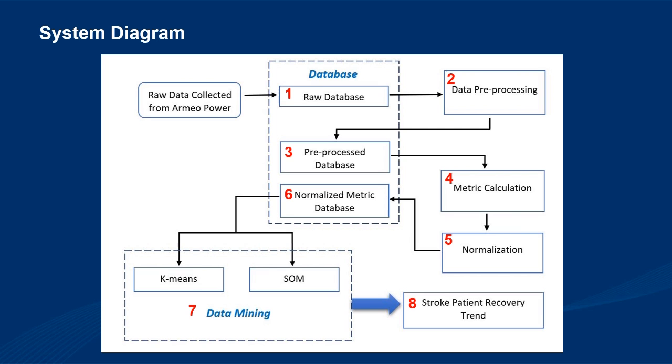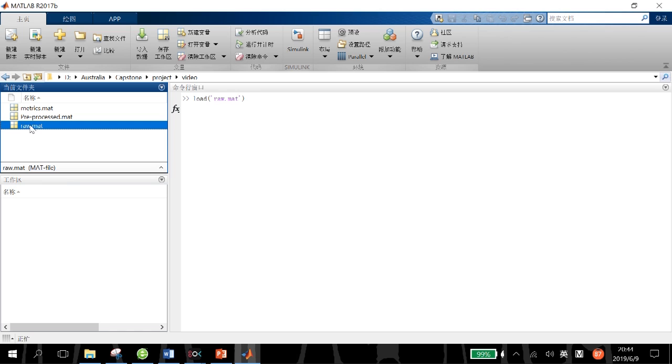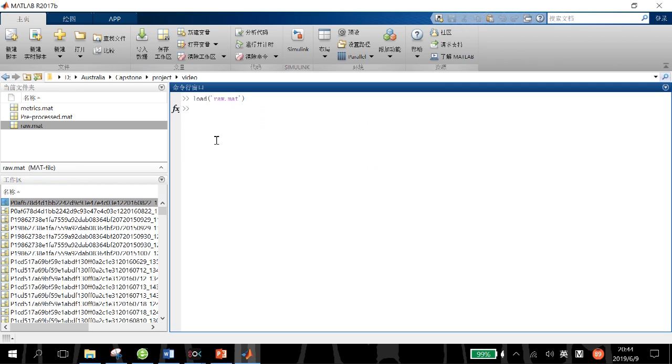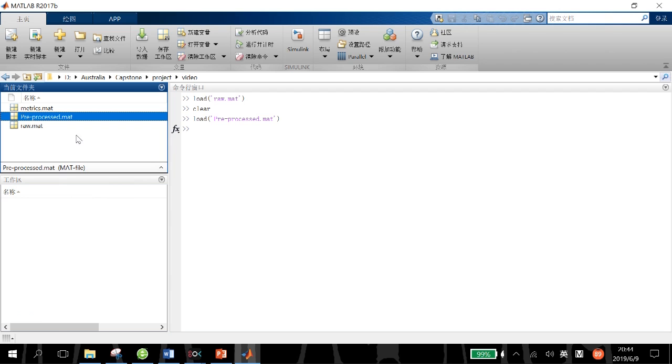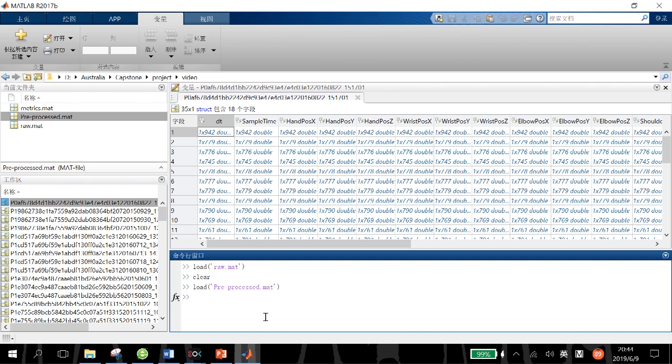We have three kinds of databases: the raw database, the pre-processed database, and the normalized metrics database.